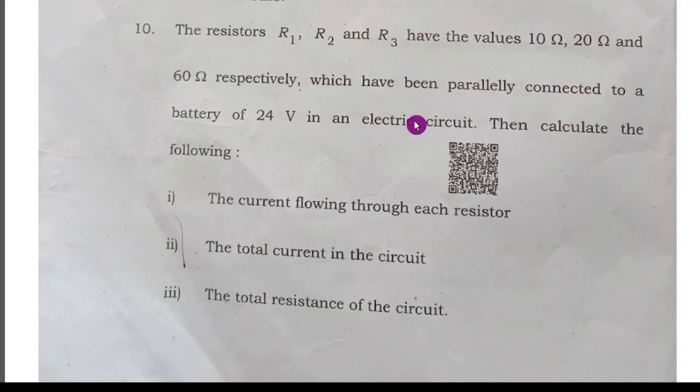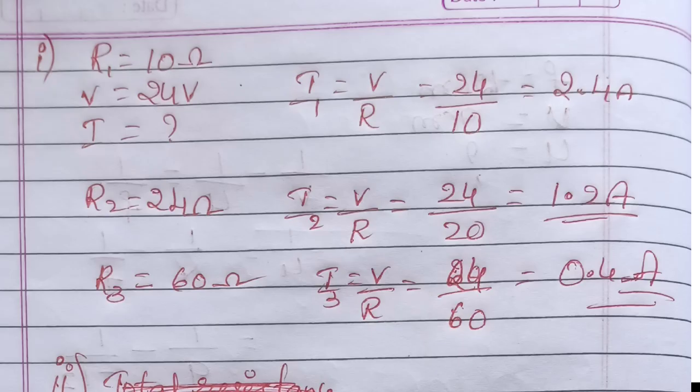They are going to use and argon gas they will fill in the electric bulb. Tenth question: the resistors R1, R2, and R3 have the value of 10 ohms, 20 ohms, and 60 ohms respectively, which have been parallelly connected to a battery of 24 volt in an electric circuit. Then calculate the following: the current flowing through each resistor and the total current in the circuit, total resistance in the circuit.